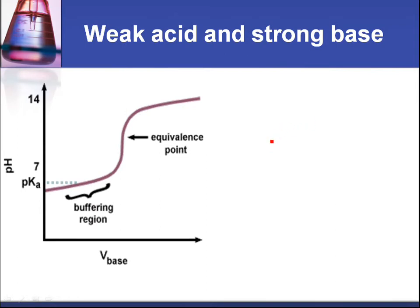Let's look at the curve for a weak acid and a strong base. So the start of the curve is obviously a bit higher because we're talking about a weak acid. So the curve starts off and increases gradually until we get the increase.